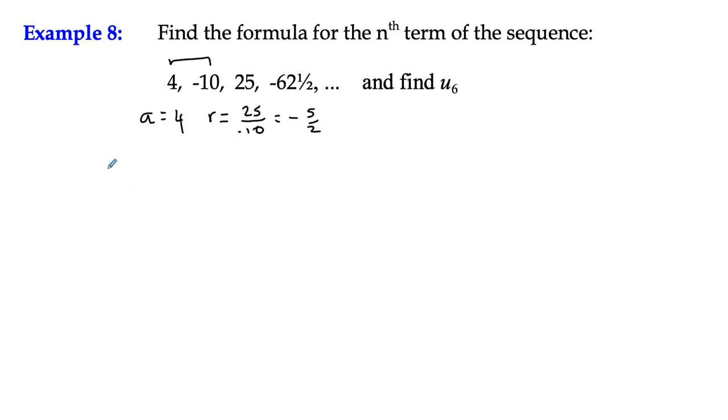So we know that un is equal to a multiplied by r to the power n minus 1. So in this case, un is going to be 4 multiplied by negative 5 over 2 to the power n minus 1. And that's all we can do. We have used the formula. We can't simplify it at this stage anymore. So we're just going to use that.